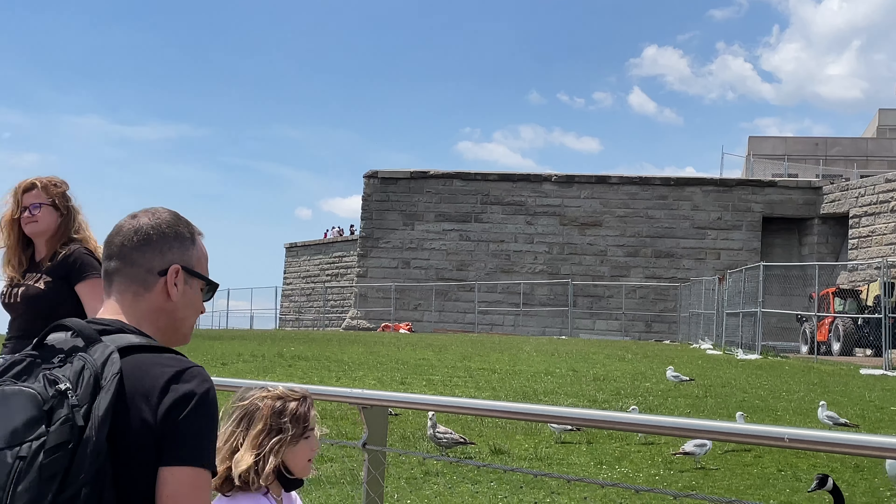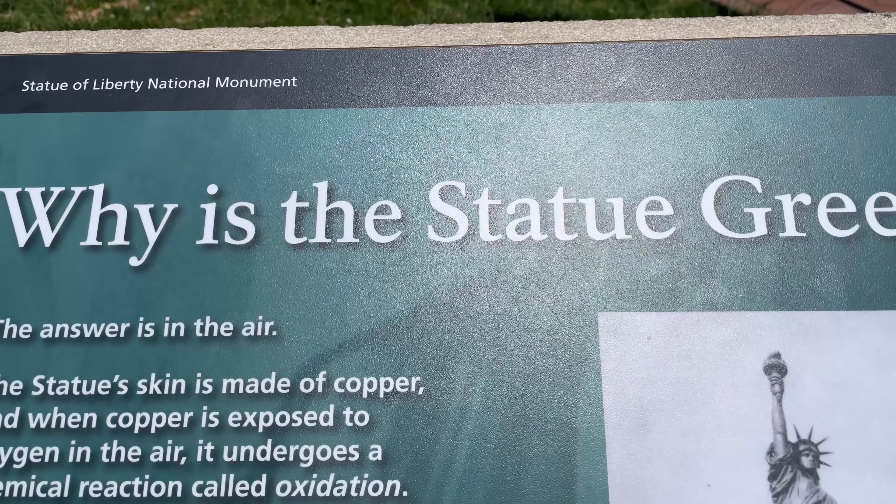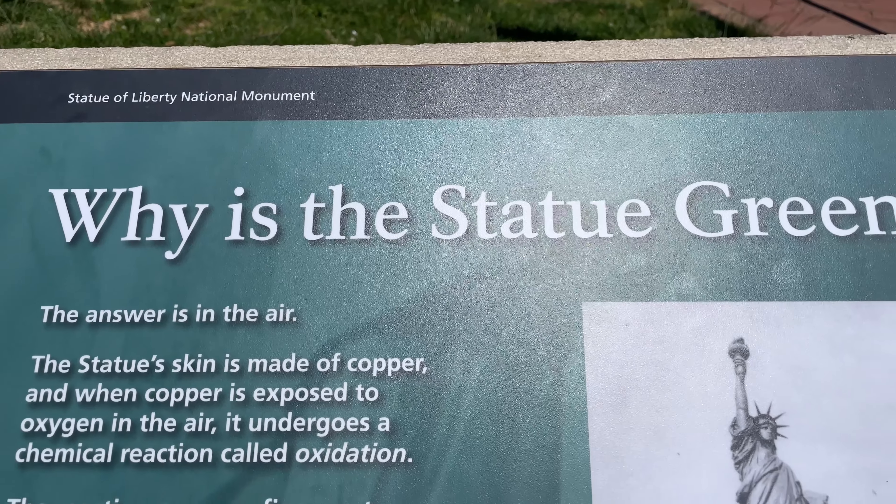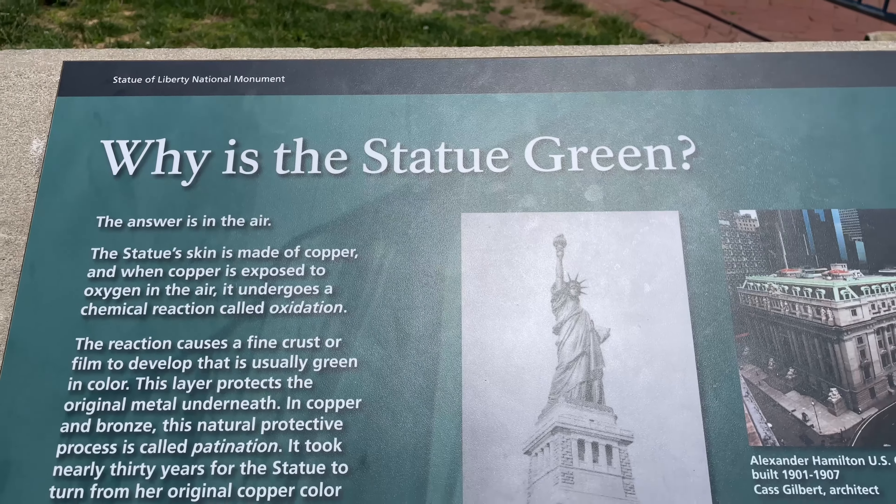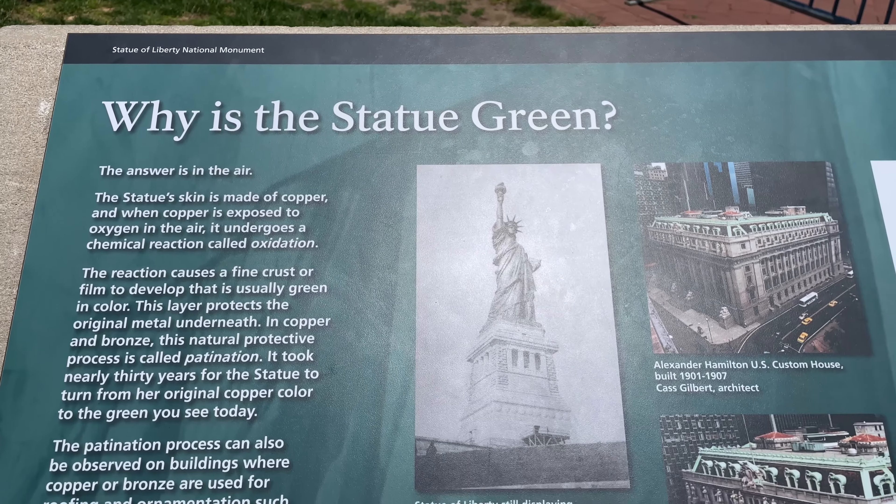The Statue of Liberty is green in color, as you can see. But the actual color is not green — it's made of copper. Because of the oxidation reaction with oxygen in the air, copper turns green and a layer is formed. That's why the Statue of Liberty is green in color. As you can see, this is also mentioned on the display board here — why the statue is green.